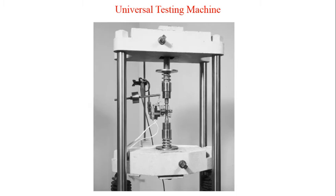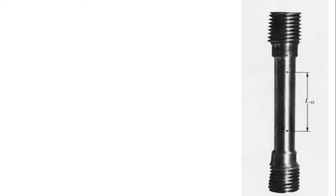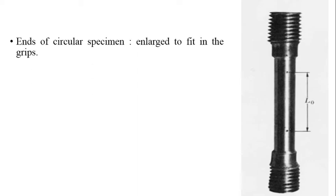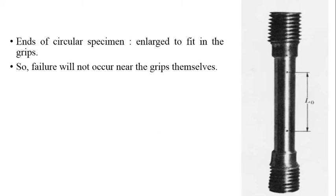This is the universal testing machine. The ends of the circular specimen are enlarged to fit in the grips of the universal testing machine. So the failure will not occur near the grips themselves, since the area is enlarged at the end — the failure will not occur at the end because of the greater cross-sectional area.